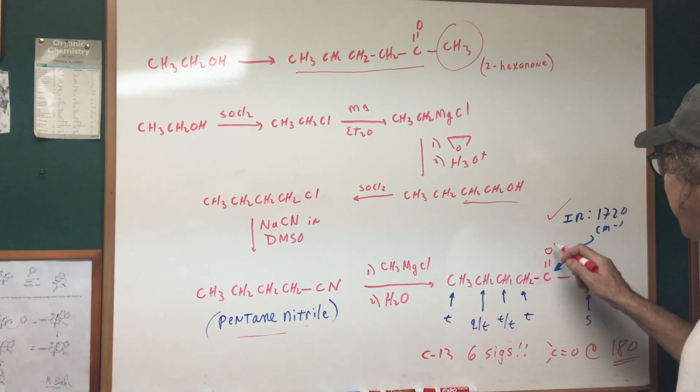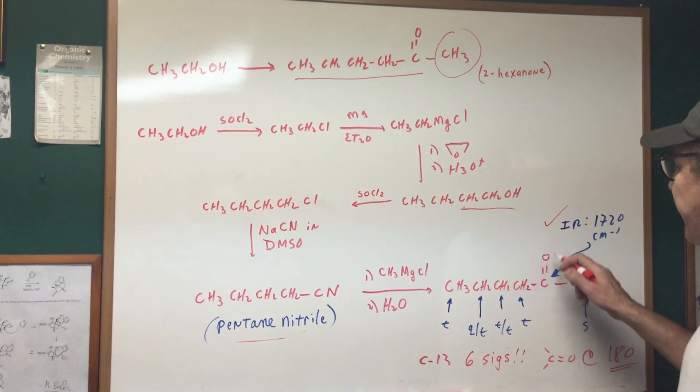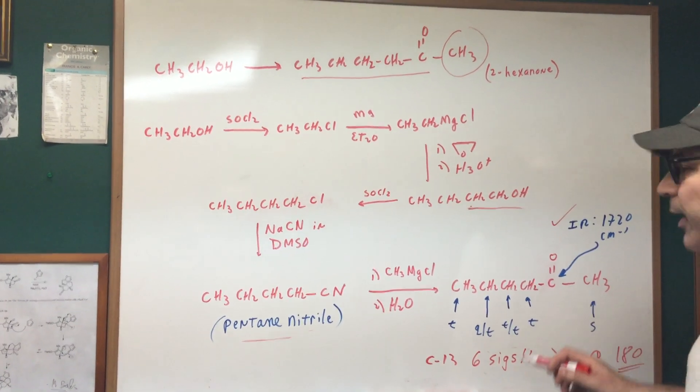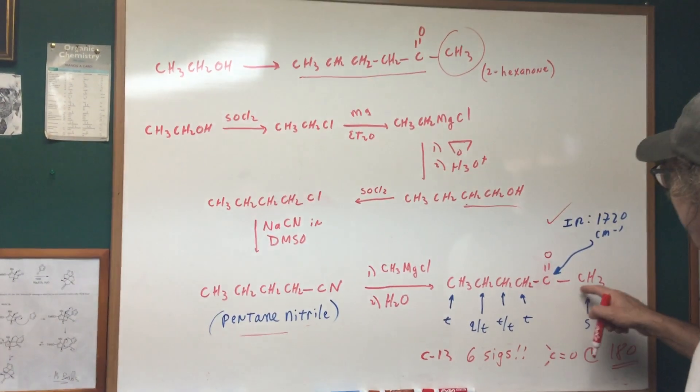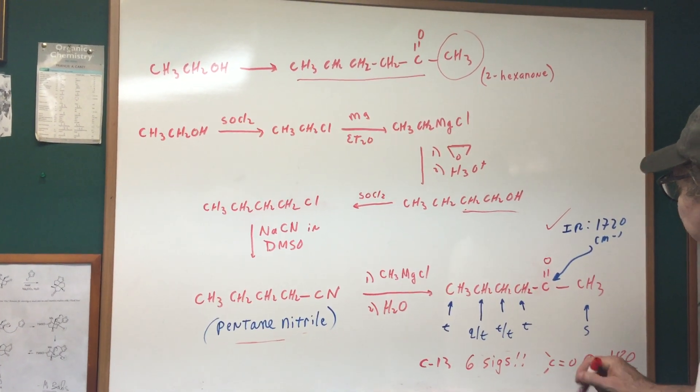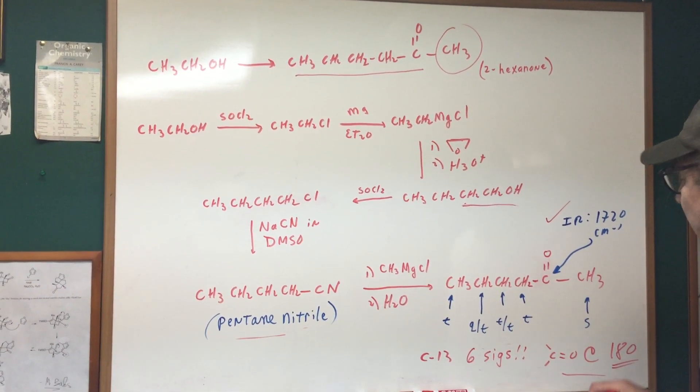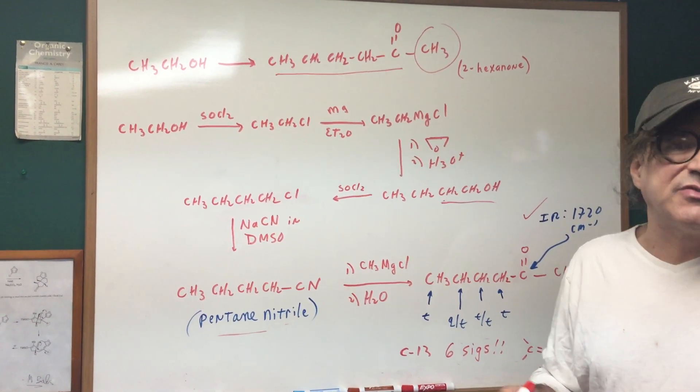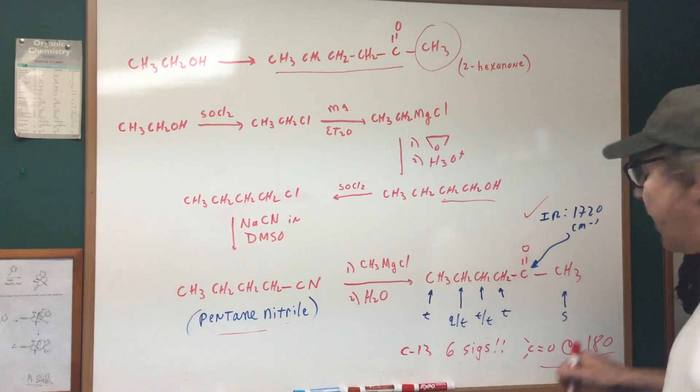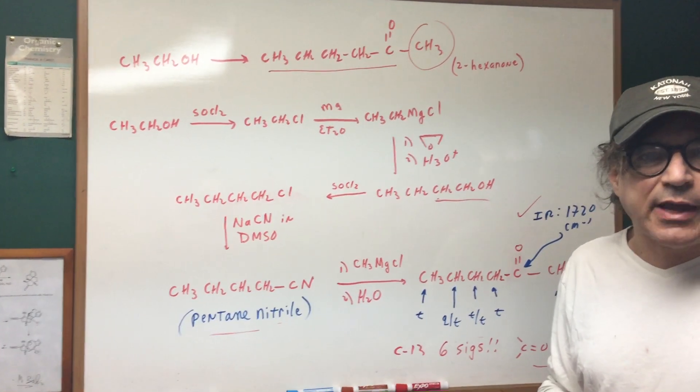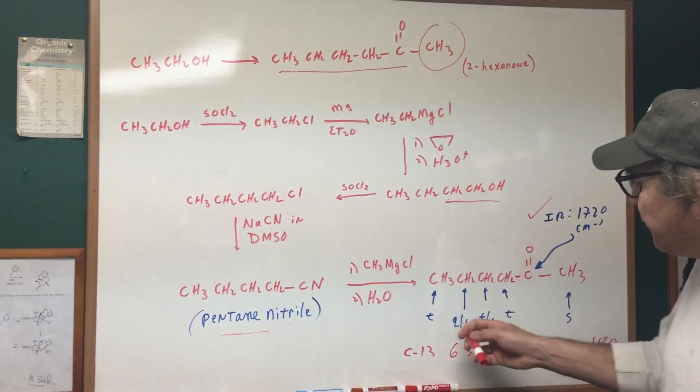If you did a carbon-13 on this, carbon-13 would give six spikes, because one for each one of the different carbons, and the main landmark that you would look for is 180 ppm. That would be like the signal in IR of 1720. So this number, 180 to around 200, will give the signal for a carbonyl group.